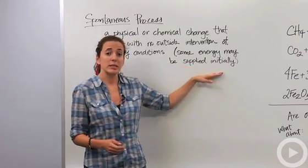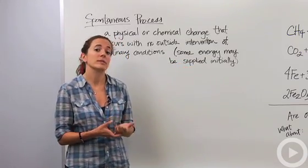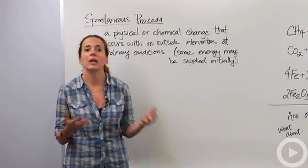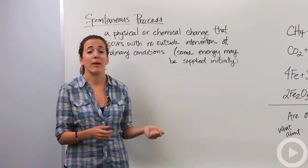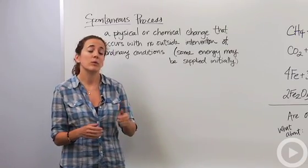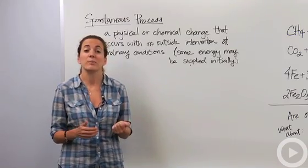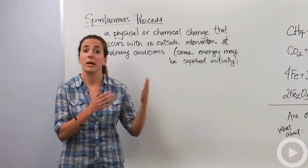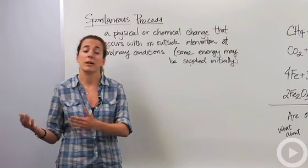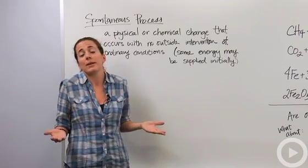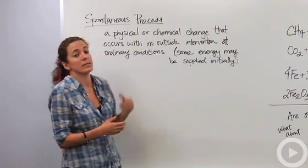Some energy might be supplied initially and that's okay. For example, when you're lighting a Bunsen burner, if you have the methane gas running, the only way it's going to combust or create that flame is if you create a spark. That small spark is just the initial energy to make the reaction get started. But once it's started, we do nothing to make the reaction continue. We call that a spontaneous process.